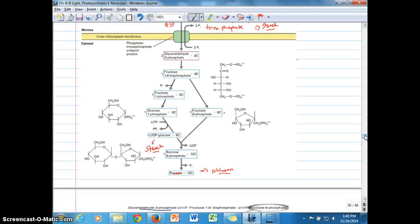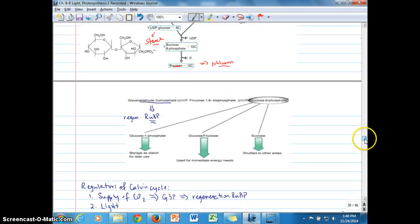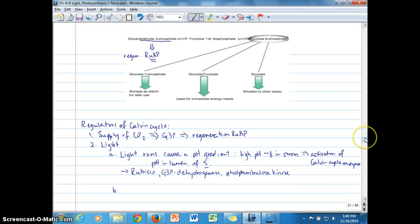We also looked at the outputs. If G3P does get exported to the cytosol, or even inside the chloroplast, it can produce starch from this triose phosphate G3P, or starch can be produced outside in the cytosol. It can be exported to the cytosol to produce sucrose, which then gets loaded into phloem, and we'll be talking about phloem loading and the movement of sucrose throughout the plant in another chapter.